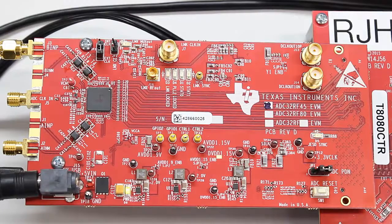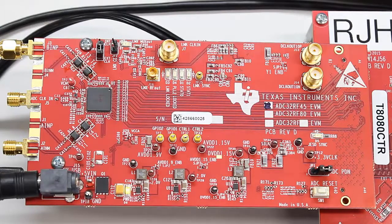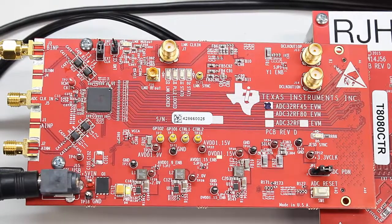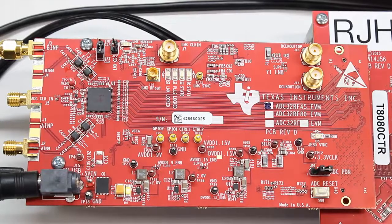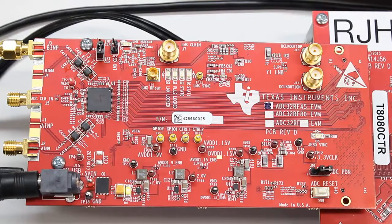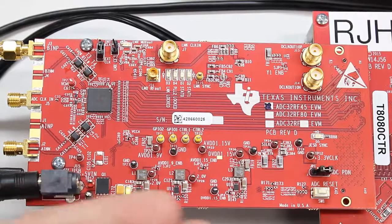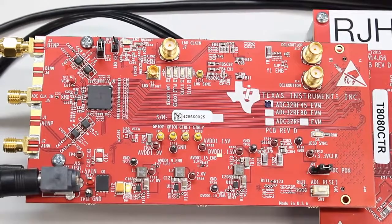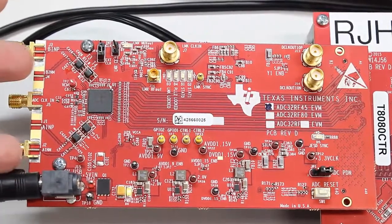With this part, it's a complete RF sampling solution. The EVM itself has onboard clocking solutions, the JESD interface that interfaces with our capture tool, the TSW14J56, power management for powering the device off a single power jack, and our input signals.